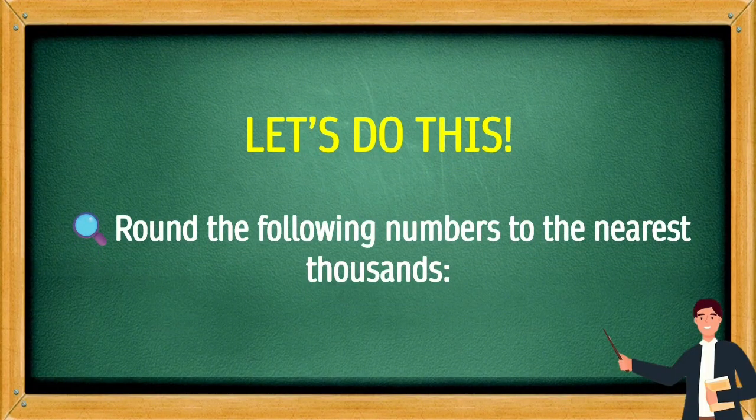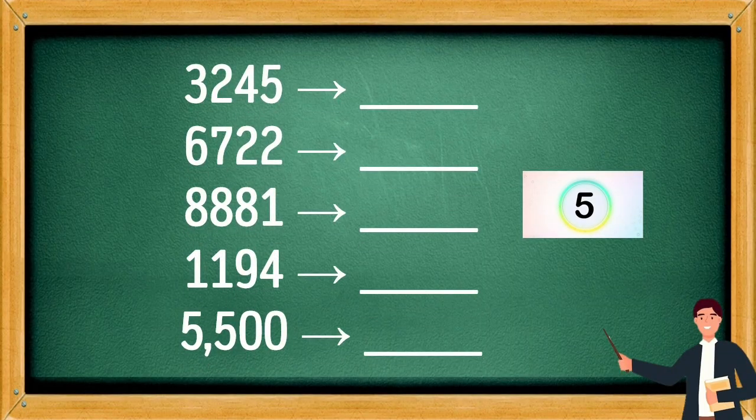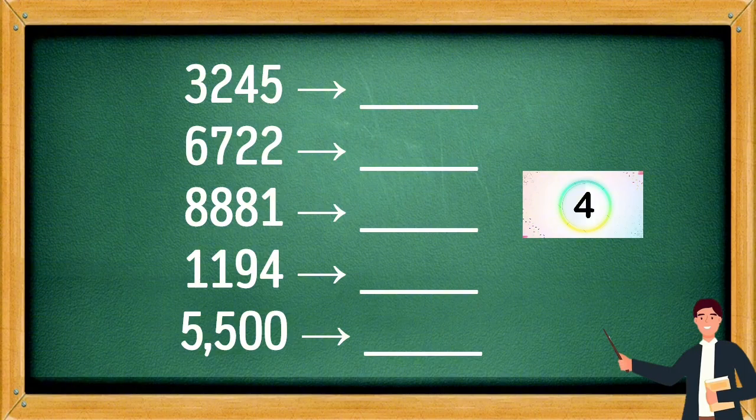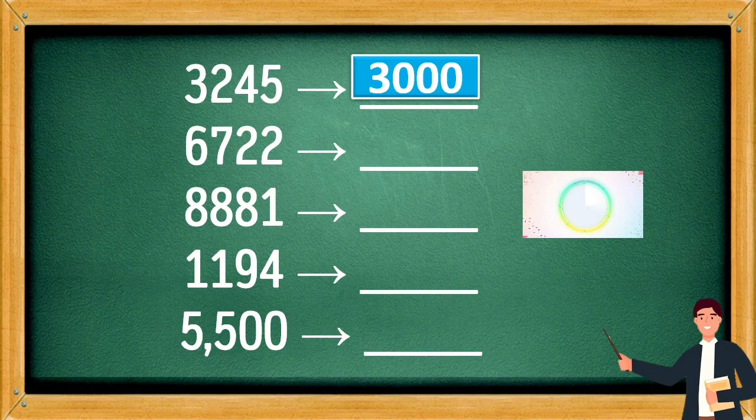Let's do this: Round the following numbers to the nearest thousand. 3,245 rounds to 3,000. 6,722 rounds to 7,000.